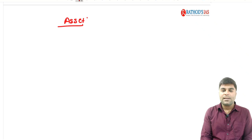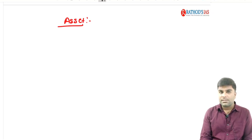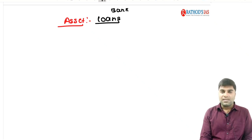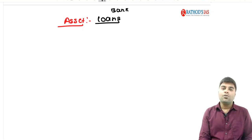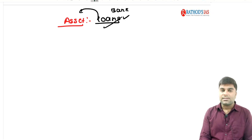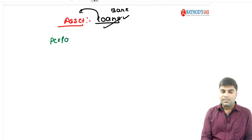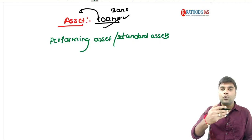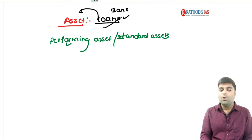Before discussing NPAs, let's understand what an asset means. An asset is something which earns some periodic revenue for you — if you construct a building and give it on rent, it is your asset because it generates periodic rental income. In case of banks, loans are called assets because the person who took the loan pays back interest payments periodically — that is the periodic revenue for the bank.